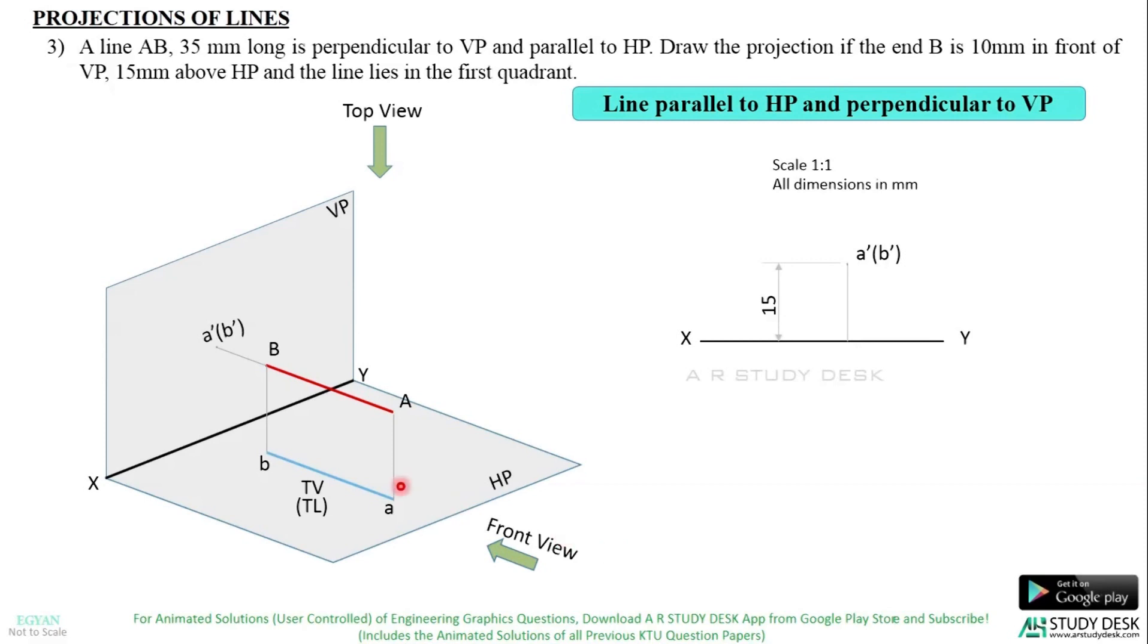In the top view, you can see the true length of this line, which is the top view length or the projection in the top view. And this line is perpendicular to our XY line. So you have to get the point B first. Where is point B? It is in front of VP. It is 10mm in front of VP. So mark that point B, 10mm in front of VP. From B, draw a perpendicular line BA, which represents the projection of the top view. And it will have the same length as that of the true length, i.e. 35mm.